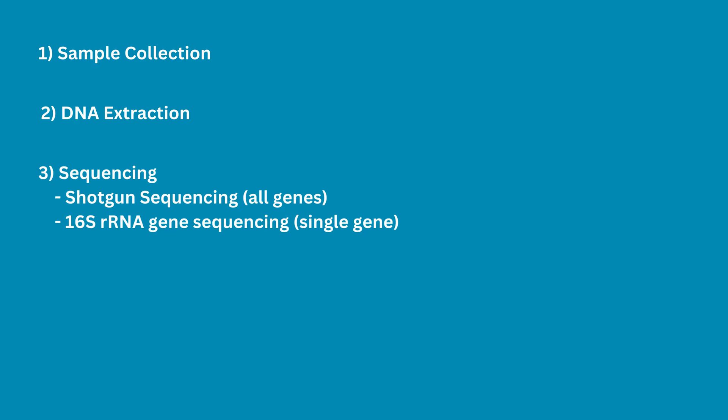The other method focuses on a specific gene found in bacteria and archaea: the 16S rRNA gene. This gene is great for identifying and comparing bacteria because it evolves at a rate that is just right — not too fast, not too slow.